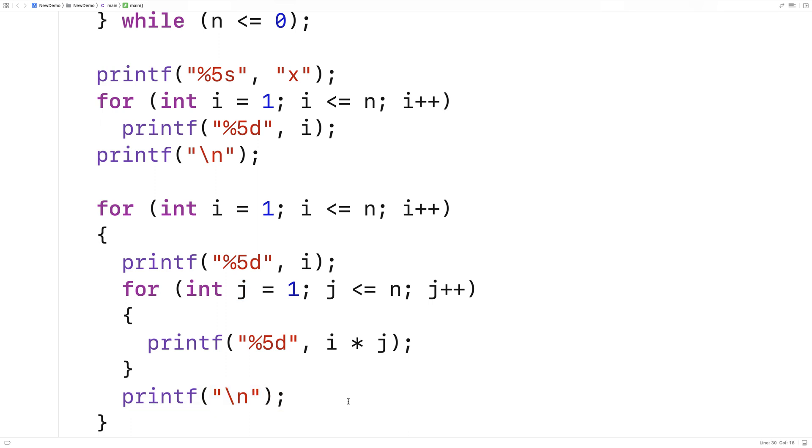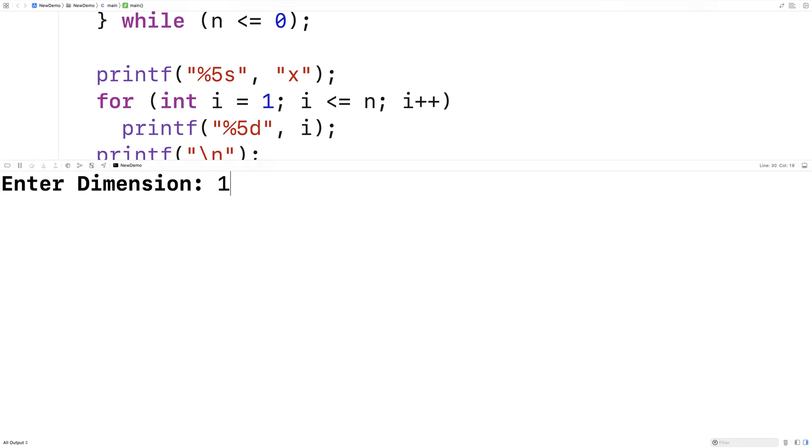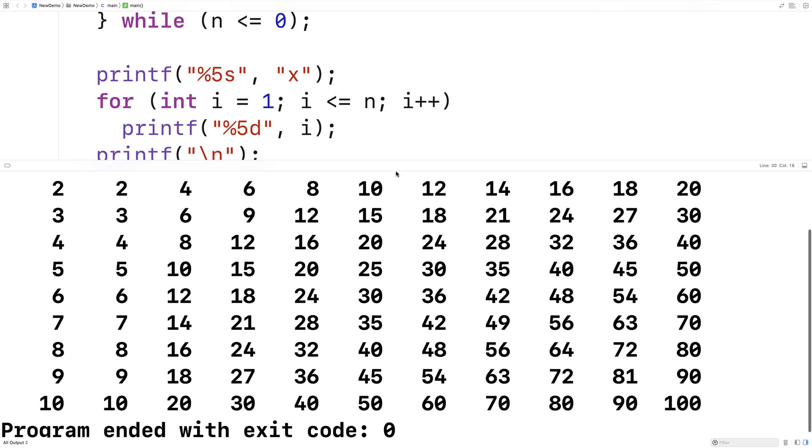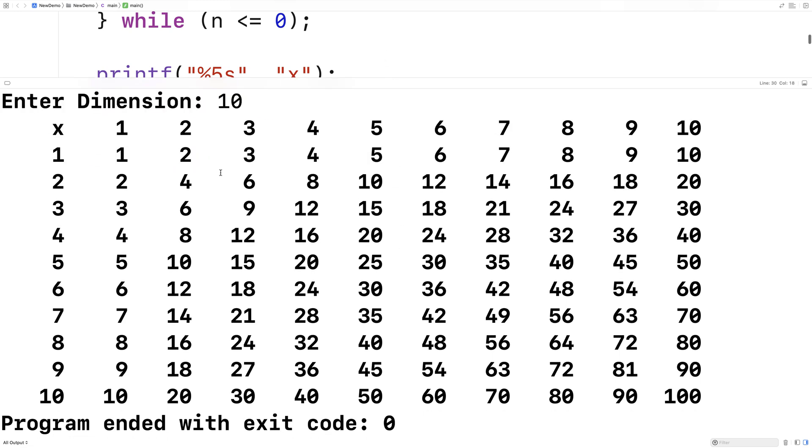Let's save this and give it a try. It'll compile now and we'll give it a dimension of, let's say, ten to start. We'll say enter dimension, put in ten, and we get this nice ten by ten multiplication table.